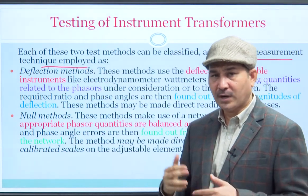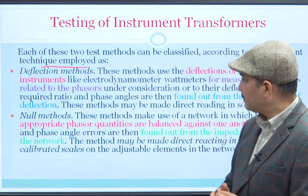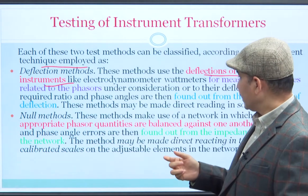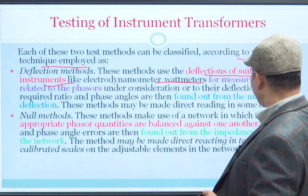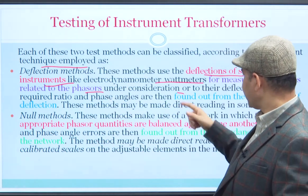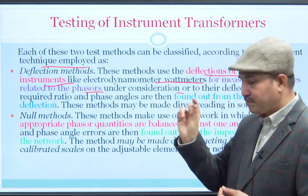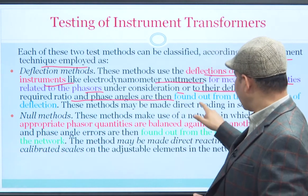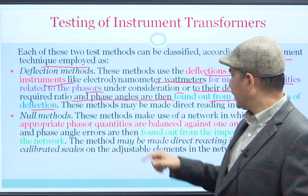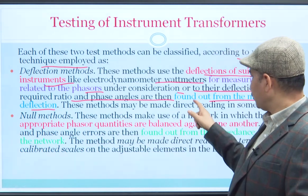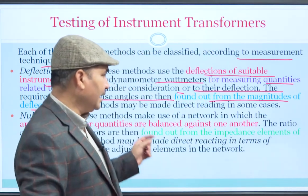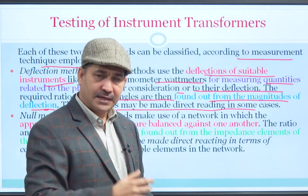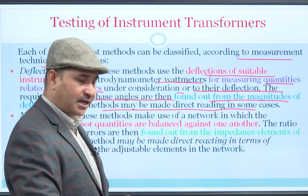Based on the measurement technique, we can again classify into two categories. One is deflection methods — in these methods, deflection of a suitable instrument is used as a mechanism to read out values. For example, an electrodynamometer or wattmeter for measurement of quantities related to the phasor under consideration. The required ratio and phase angles are then found from the magnitude of the deflection. These methods may be made direct-reading in some cases because a pointer or indication mechanism is present.